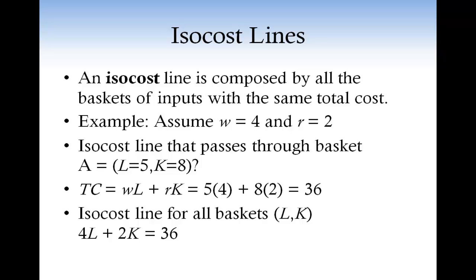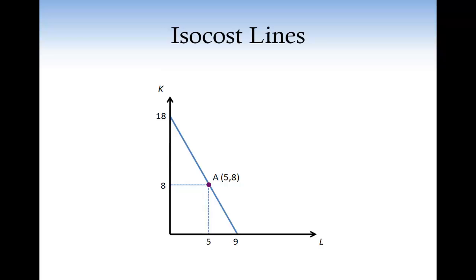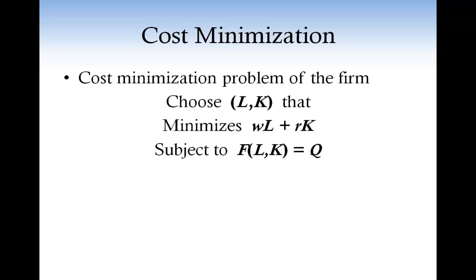Graphically, let's first illustrate the input basket A with 5 units of labor and 8 units of capital. The combination of inputs A costs $36, and the isocost line that passes through A has slope negative W over R — in our example, negative 2. Now, if the concept of isocost line is clear, we can put together the two concepts of isoquant and isocost line to characterize the cost-minimizing basket of inputs.